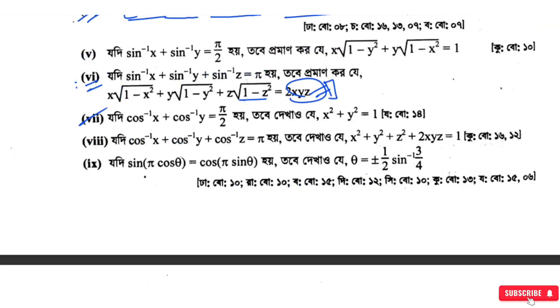We have the problem: cos⁻¹x + cos⁻¹y is equal to π/2. It is given, and we have to prove that x² + y² is equal to 1.